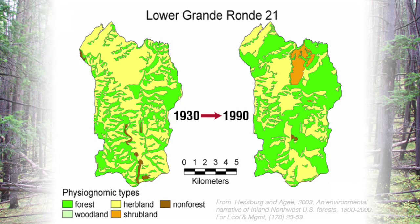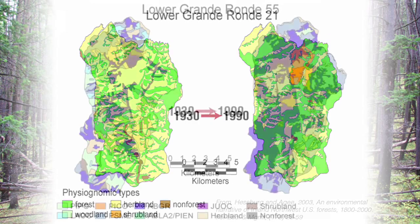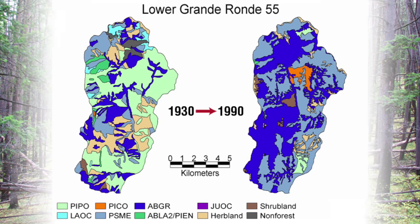This same phenomenon of forest expansion has been documented in other regions of the northwestern United States. Research by Paul Hesburg's group out of Wenatchee, Washington looked at large landscapes — roughly 10,000 to 30,000 acres — on the lower Grand Ronde in eastern Oregon and Washington. The map from the 1930s shows green as ponderosa pine forest and yellow as grassland; by the 1990s the ponderosa pine forest had vastly expanded. Similarly, in wetter forested landscapes where grand fir is dominant, by 1990 grand fir and Douglas fir had dominated the landscape with very little grassland or ponderosa pine cover left.